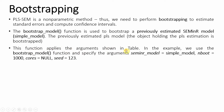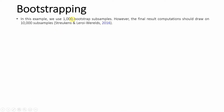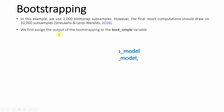This function applies the following arguments: the seminr model — which model you want to bootstrap, that is the PLS model we earlier estimated — and the number of bootstrap samples. In this session I'm going to use 1000, though the normally recommended number is higher, that is 10,000. The cores argument specifies the number of CPU cores to use for parallel processing, and the default is null which utilizes the maximum number of cores. The seed is the starting seed to make a random process replicable, with a default of 123. For final result computation you should draw on 10,000 subsamples.